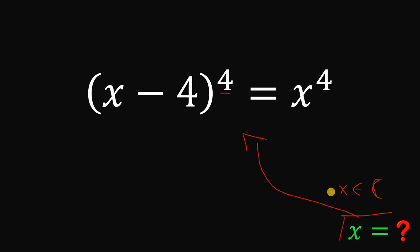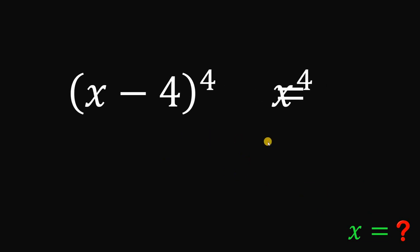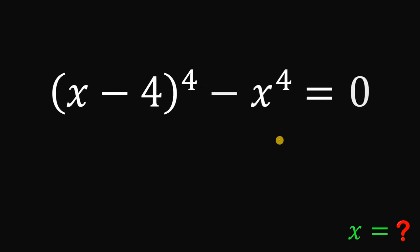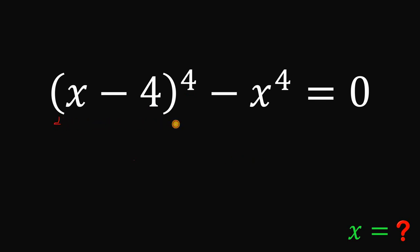We are not limited to real numbers. Now let's solve this equation. What we're going to do here is to equate this to 0. So we have x minus 4 raised to the power of 4 minus x raised to the power of 4. What we're going to do is rewrite x minus 4 raised to the power of 4. Take note that this 4 can be written as 2 times 2.